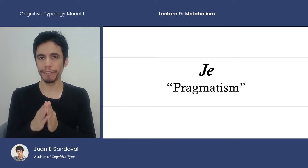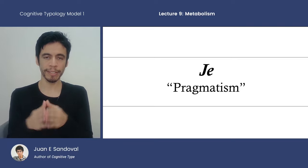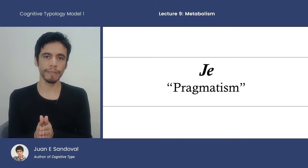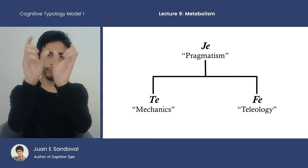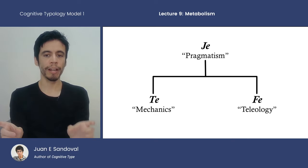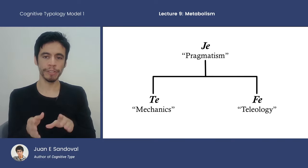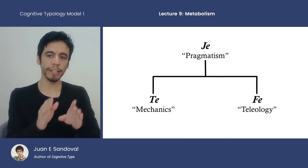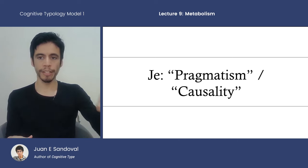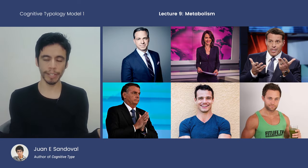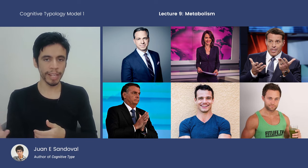Let's begin by describing the metabolism of JE. JE metabolism is nicknamed pragmatism. We use aliases to describe each of the functions because natural language is helpful to us, even if not as precise as it could be. Under JE pragmatism, we have TE as mechanics and FE as teleology. JE is also called causality. If you look at what JE focuses on across all JE samples — whether politics, economics, or social dynamics — the fundamental underlying factor is the tracking of effects of object-to-object interactions.